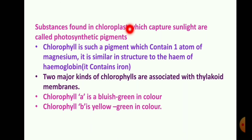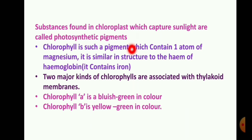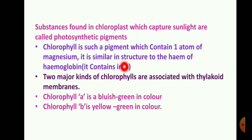Substances formed in the chloroplast which capture sunlight are called photosynthetic pigments. Chlorophyll is such a pigment, which contains one atom of magnesium. It is similar in structure to hemoglobin in blood, where hemoglobin contains iron atoms, while chlorophyll contains magnesium.